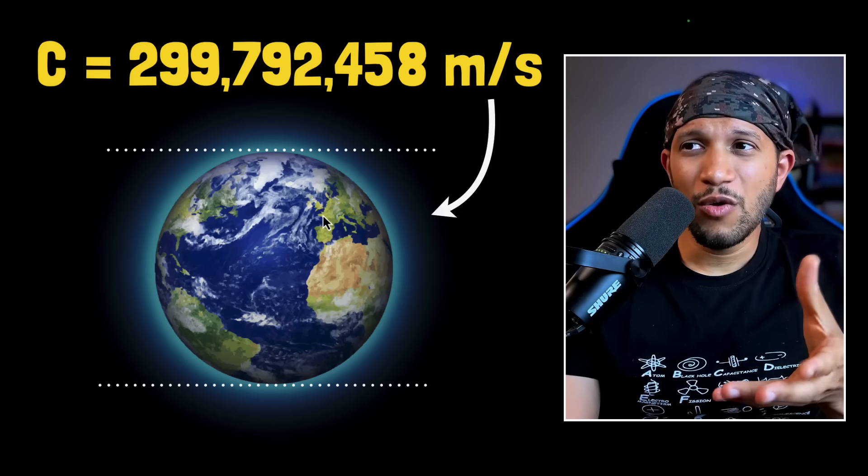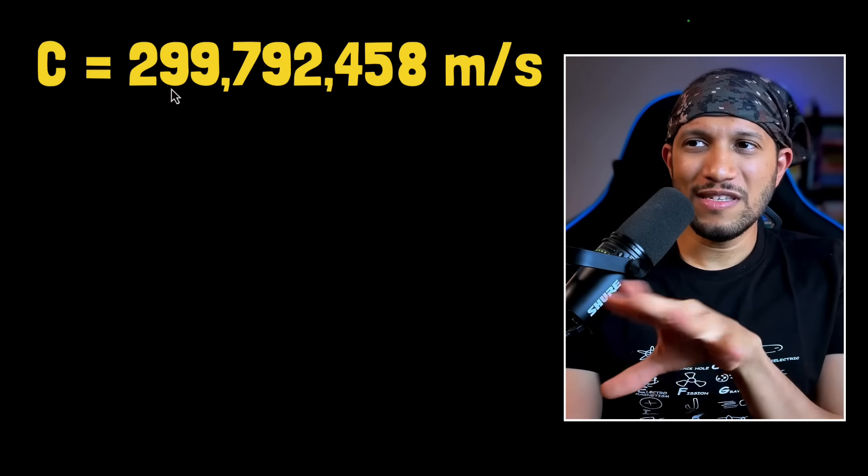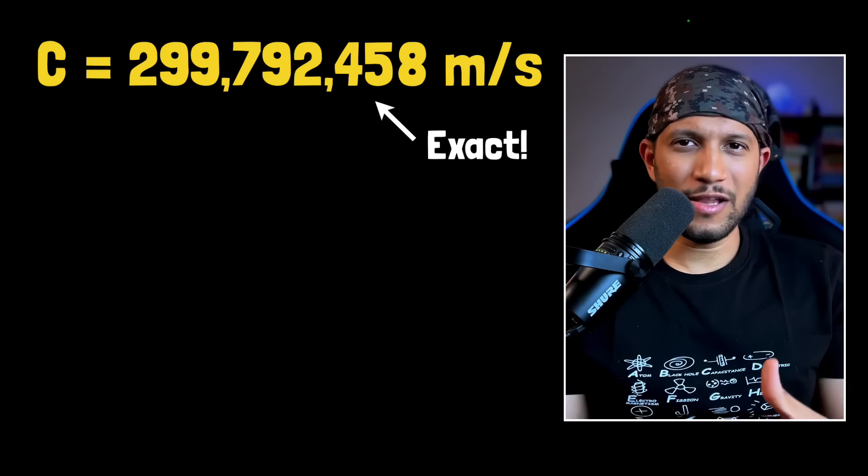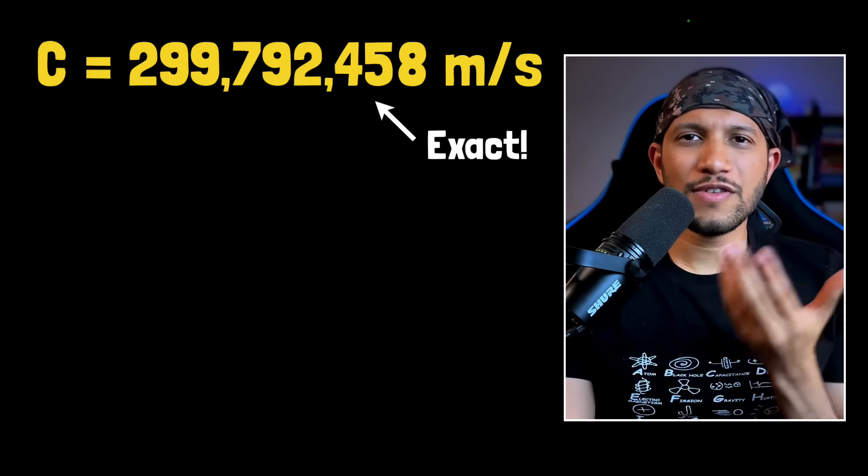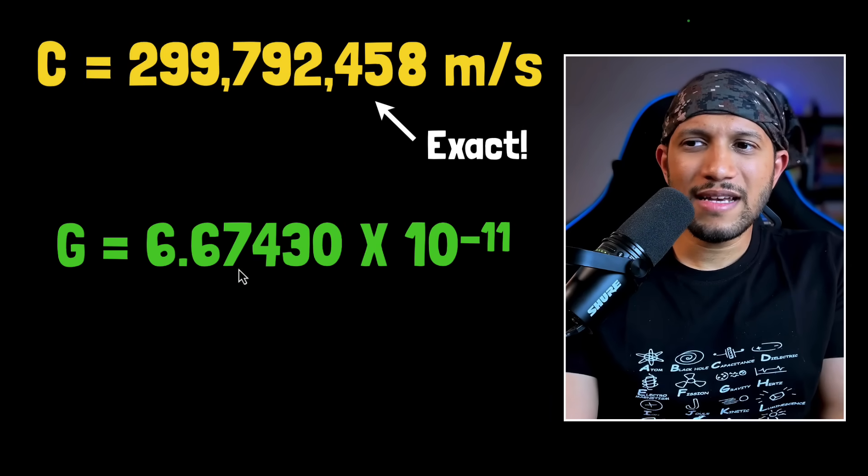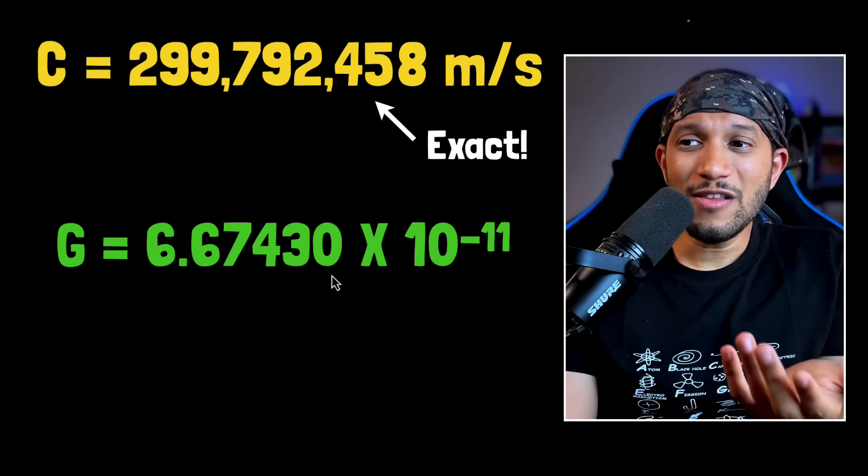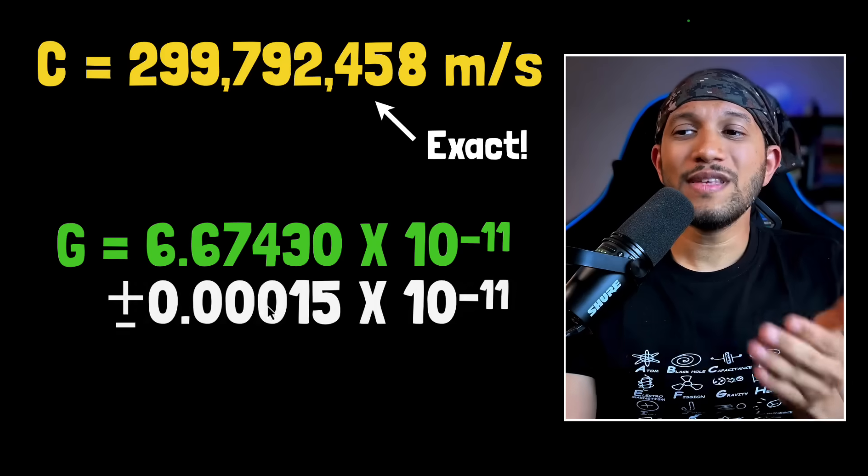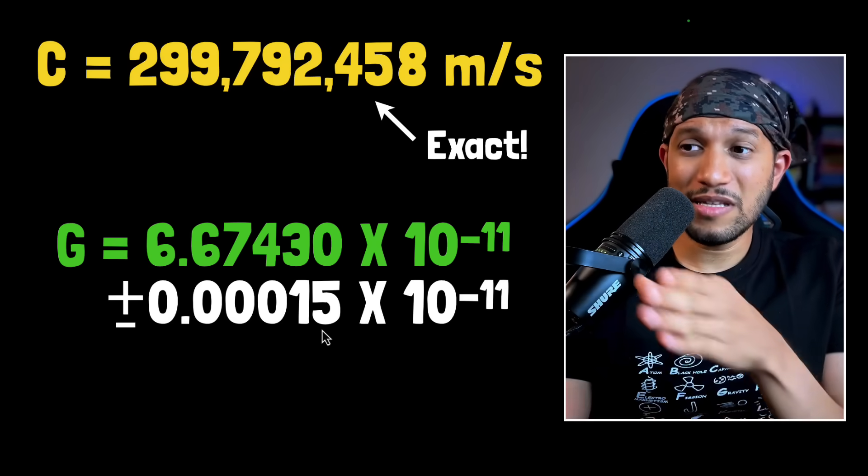Okay, so where do we start? Well, we start by looking at the fact that the speed of light value in vacuum, this number, is an exact value. Here's what I mean. If you were to look at the measured value of some constants, like say the gravitational constant, then you would notice that the value is not exact. There is always some uncertainty over there.